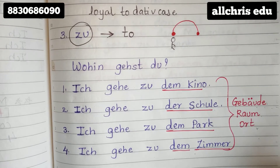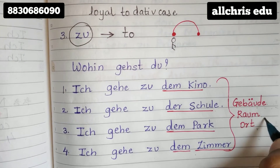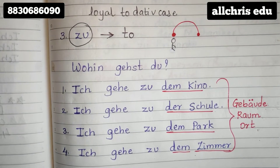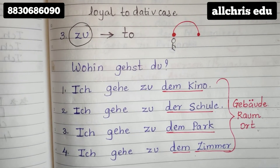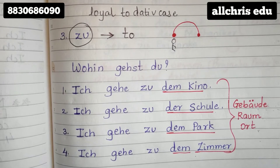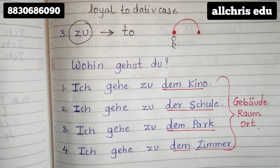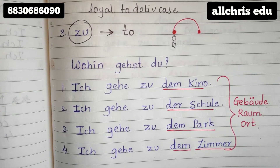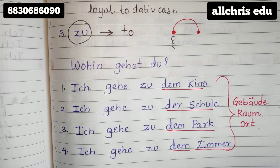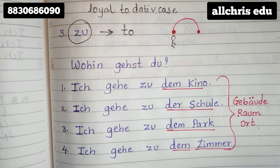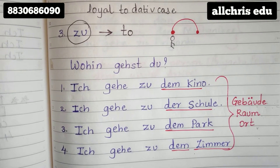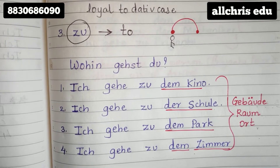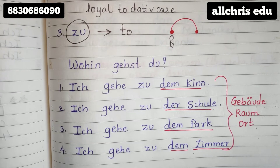Buildings, Raum means a room, and Ort means some places which is not a country. If a country is there, then we have to use 'nach', which you have watched in the previous video. If you are using articles, then use 'in' for that too. The meaning is still 'to', but this is a building, a room, or some place which is not a city, country, or state.